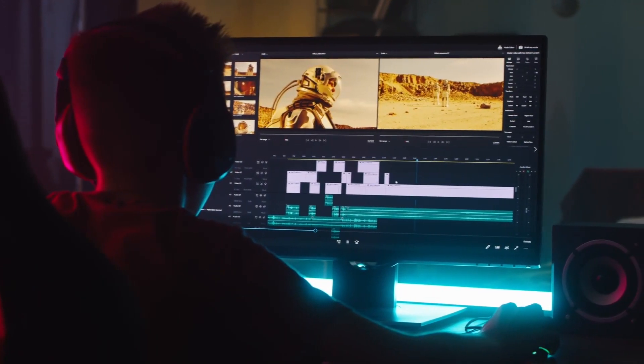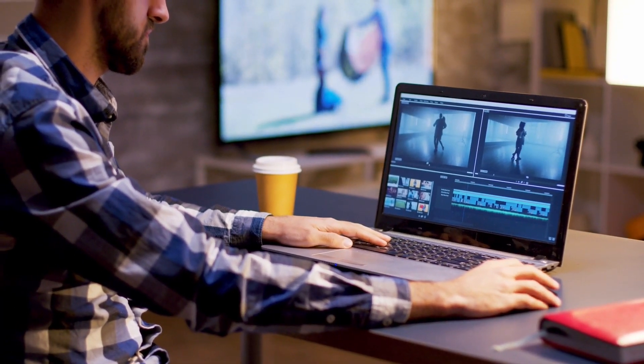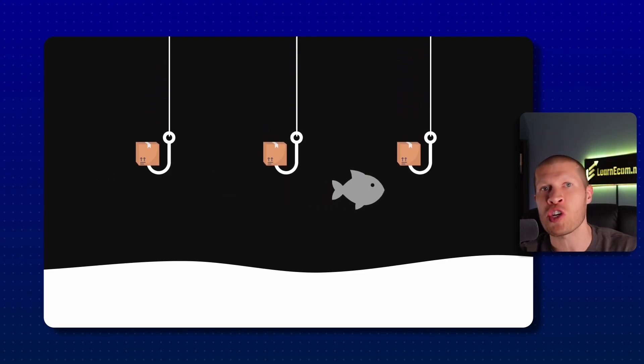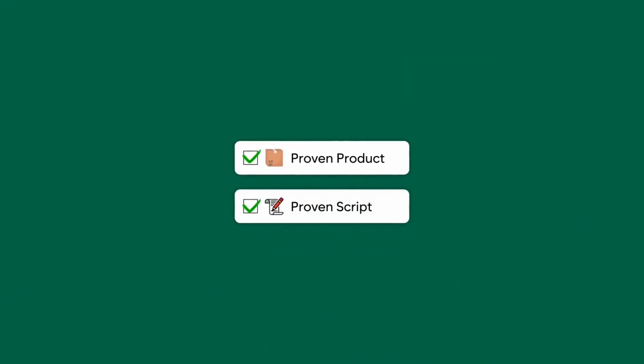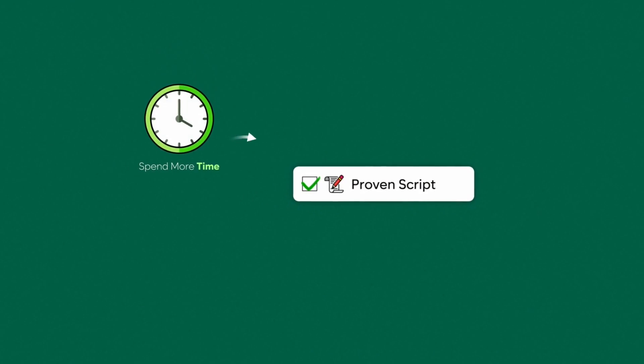That's how I'm using this software — rewriting proven scripts and automating about 90% of the production. It saves a huge amount of time and doesn't cost much compared to outsourcing. The whole strategy is to test a lot of products with different video variations very quickly. If you upload a video and get five sales with 2,000–5,000 views, you've proven the product and the script. That's when you invest more time and money into better B-roll and higher-quality production.